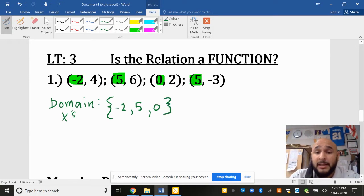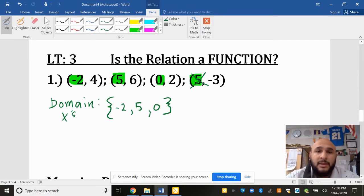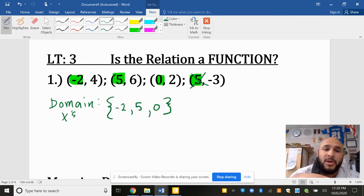Notice I did not list the 5 again. You already told me 5 was a part of the domain. So that is enough. If you write 5 again, it will mark you wrong.